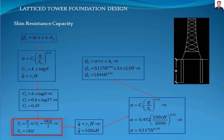The undrained shear strength S_u results in 2 kilopounds per square foot. The next step is to calculate the effective overburden pressure, where H is the unknown to solve, so this expression becomes 100 times H. Inserting all these values into the adhesion factor equation and solving based on the unknown H gives 0.170 times H to the power of 0.45. The pile skin resistance capacity is then 1.844 H to the power of 1.45.